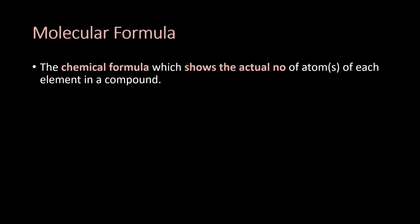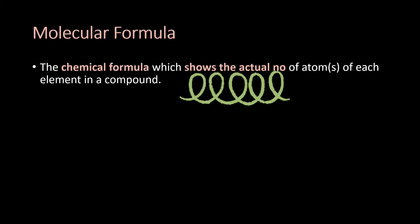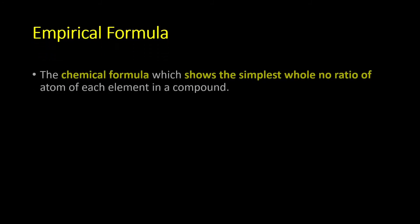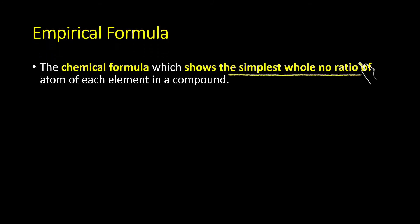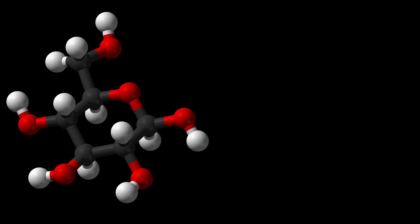Molecular formula is the chemical formula which shows the actual number of atoms of each element in a compound. Empirical formula is the chemical formula which shows the simplest whole number ratio of atoms of each element in a compound.